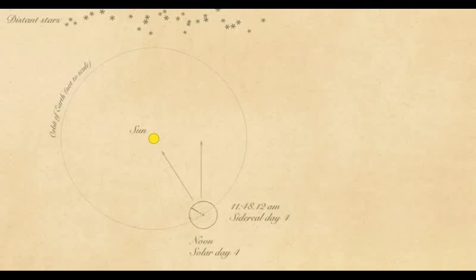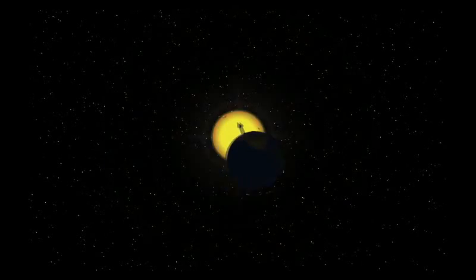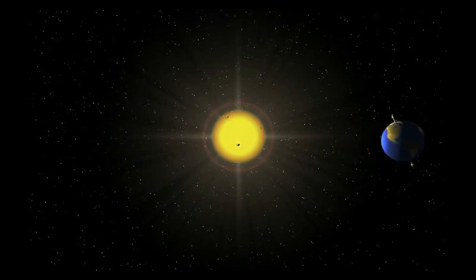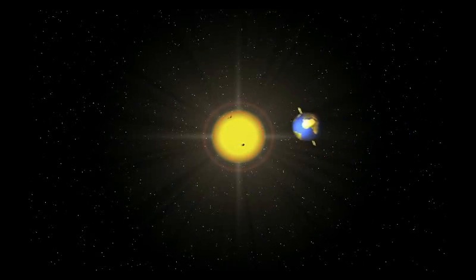So that's why noon doesn't become midnight six months later. And this orbit around the sun explains why the stars we see at night near the celestial equator change throughout the year. The night side of the Earth rotates around, revealing different stars.